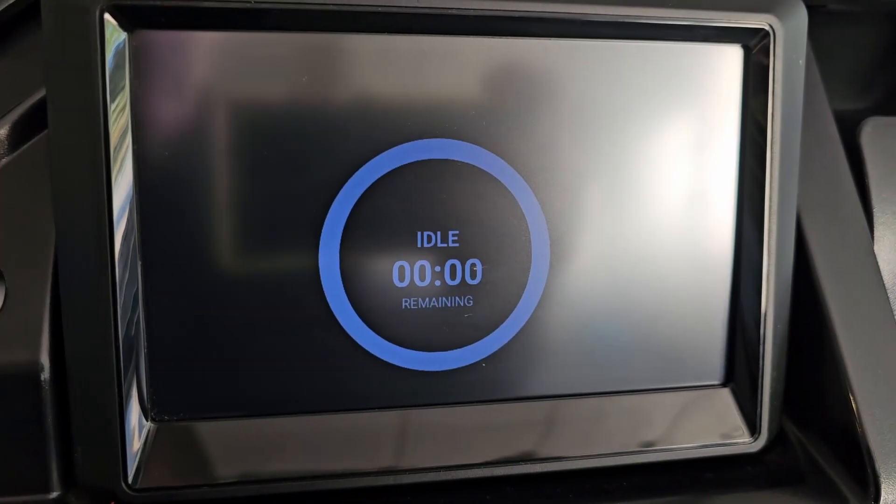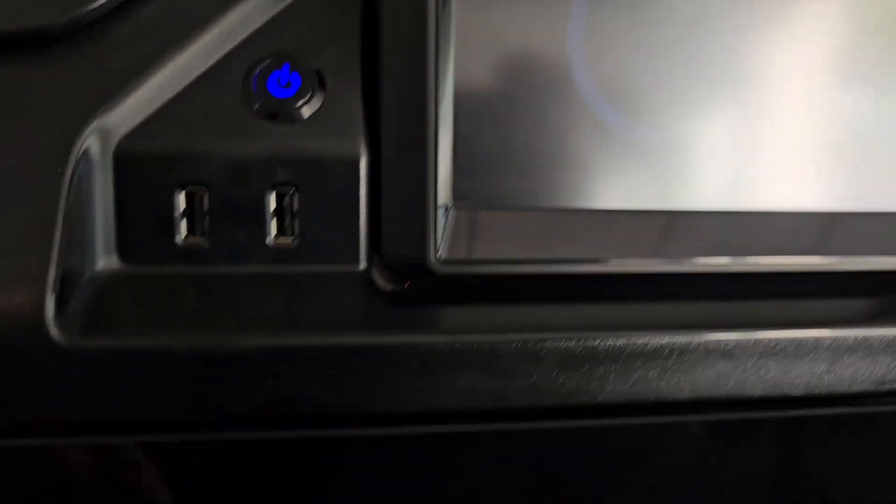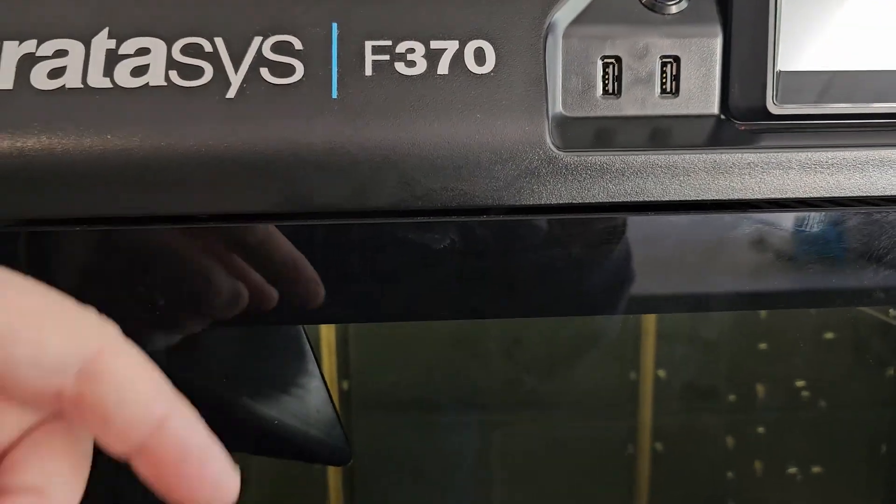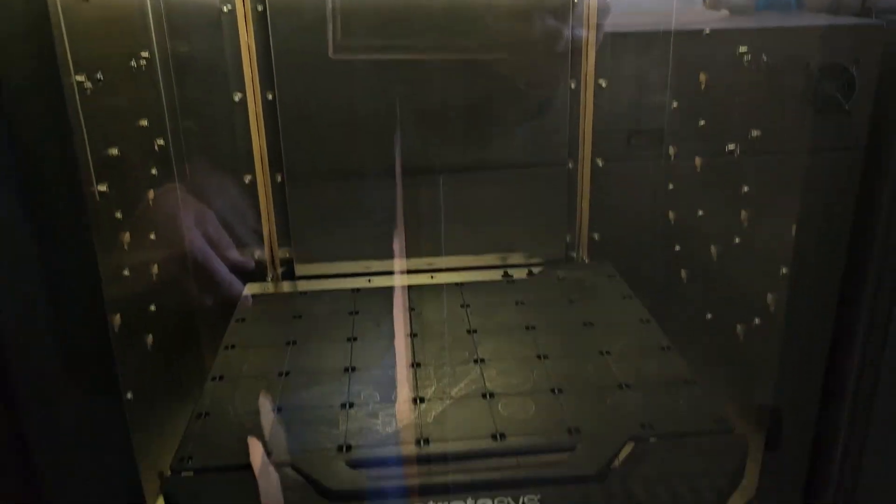I have the printer turned on. It's in idle mode. It's already gone through its initialization. The print head moves around, checks its location in relation to the build chamber, that sort of thing.